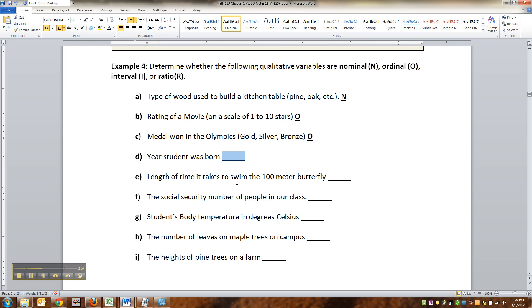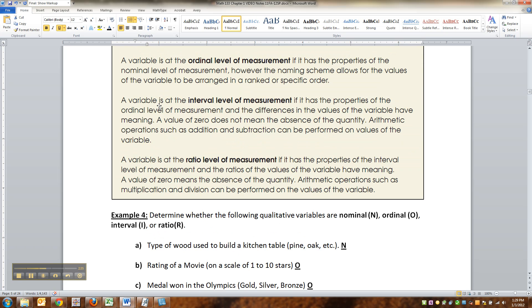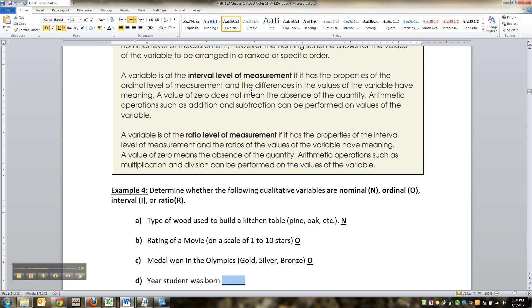Now the year a student was born, so if you were born in 1990 and somebody else was born in 1992, you know that you're two years older than that person. So not only is there an order, 1990s before 1992, but you can do a meaningful calculation on it. So it's past ordinal. You're in the interval versus ratio thing. So then the question is, the real difference between these two is, does the value of zero mean absence of a quantity?